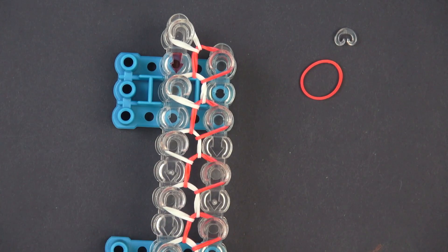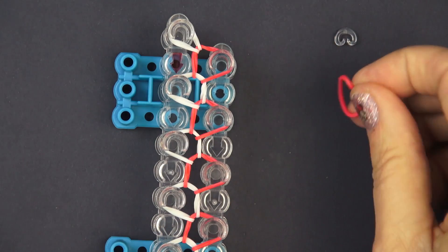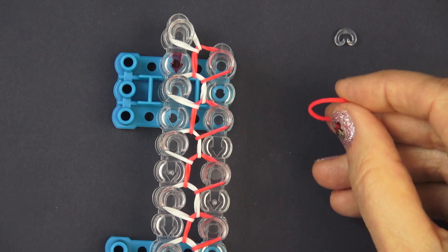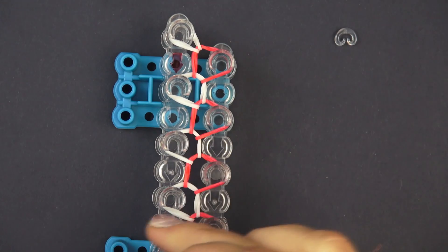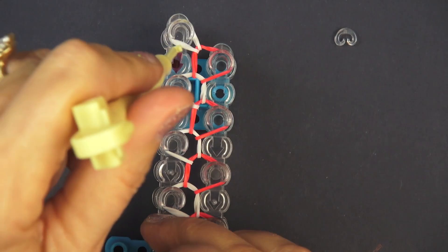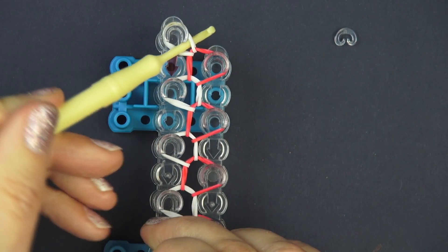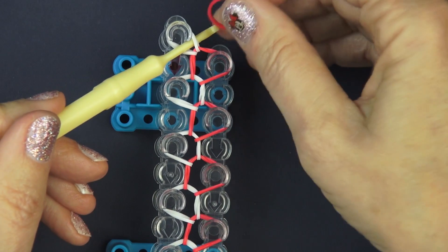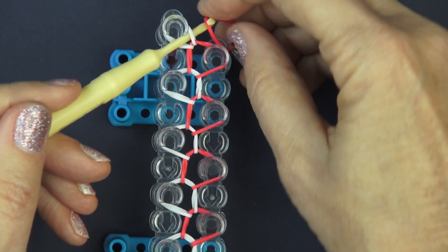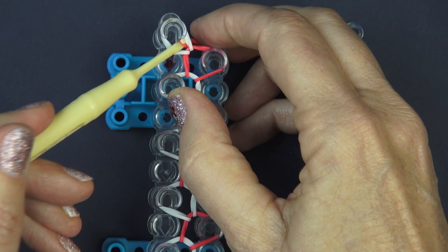Now it's time to put on the clasp and that's where you get your extra rubber band and you're going to use the hook and go under here. See where I'm at? And you're going to get this rubber band and bring it through here.